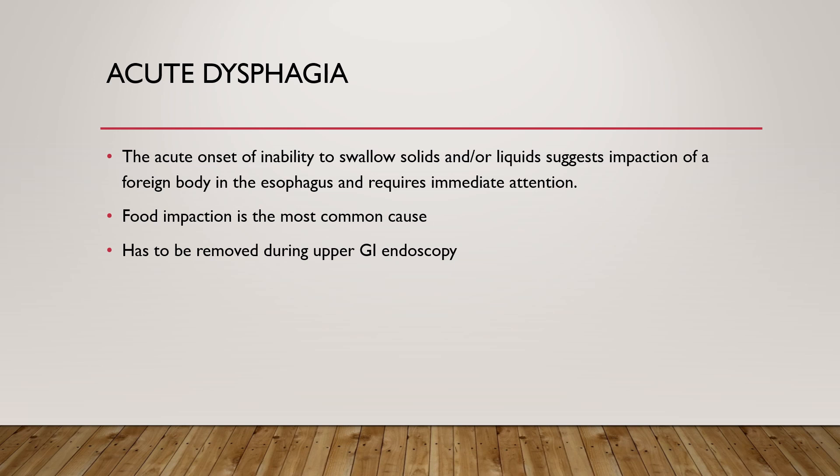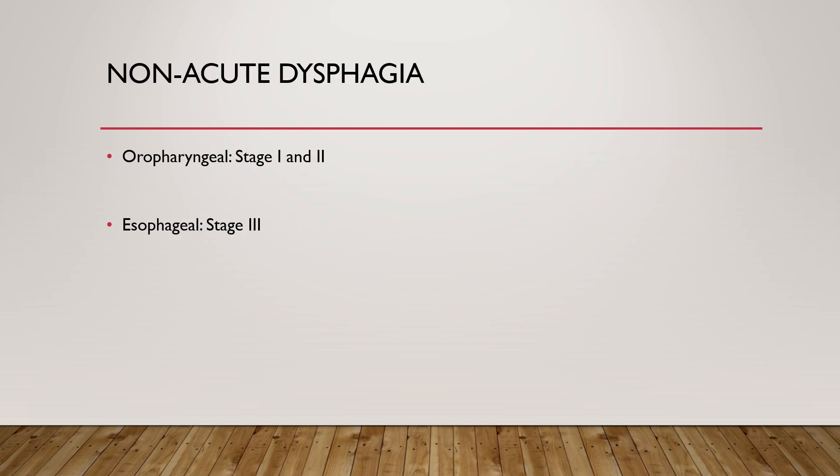Dysphagia can be divided into acute and non-acute. Acute dysphagia is the sudden onset of inability to swallow, which develops after taking solid meals and the food bolus gets stuck within the esophagus. This can be removed by upper GI endoscopy. Non-acute dysphagia is classified as either oropharyngeal or esophageal dysphagia.